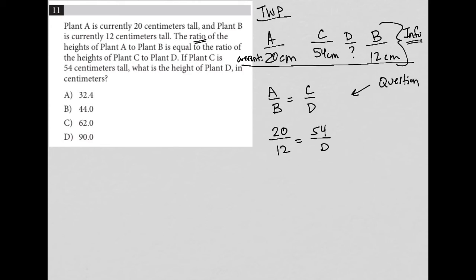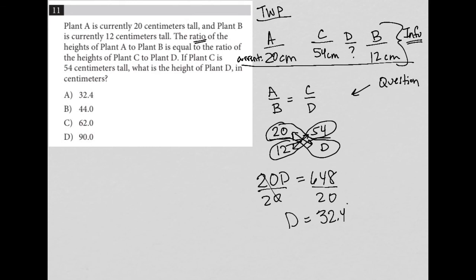So the last step here is to actually solve for D. I can cross multiply because this is a proportion here. I get 20 times D, so 20D. And then we have 12 times 54, which is 648. And then of course we divide both sides by 20 here and we get D equals 32.4. And therefore our answer here is choice A.